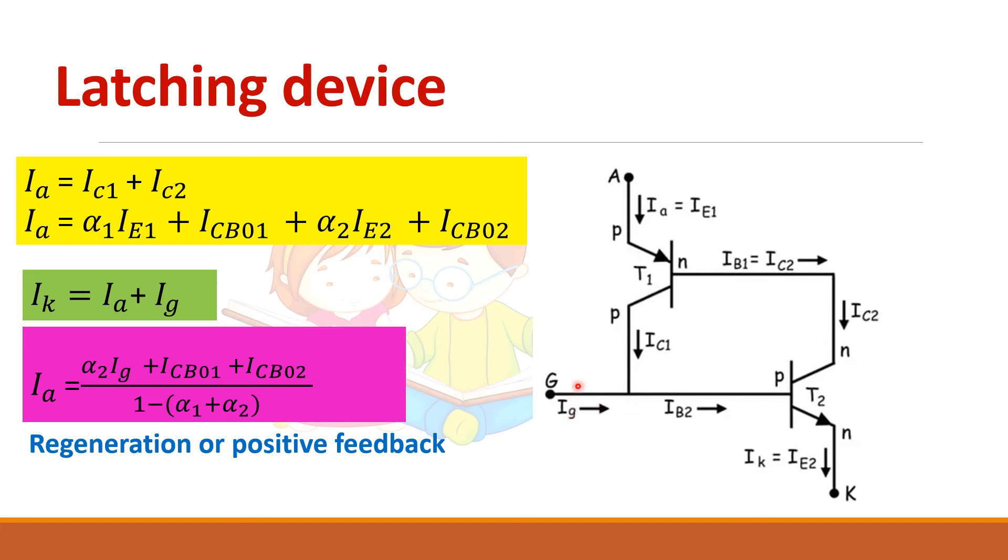So when there is no gate current, so there is no base for this transistor. So if I give the gate current, what happens? This base, gate current acts as a base for this transistor. So current flows from collector to emitter. So when there is a emitter current, here alpha 2 will increase and there is a collector current. So this collector current acts as a base for this transistor. So this transistor will also conduct.